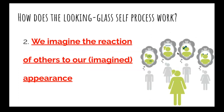The second step is that after we've imagined how we appear to other people, we then imagine the reaction that they have to that imagined appearance. So once I've imagined me as a teacher and how my students see me, I try to think about what reactions you guys have to me — maybe I think you find me boring, or awkward, or maybe I think I'm funnier than I am. Those are reactions I might think about.